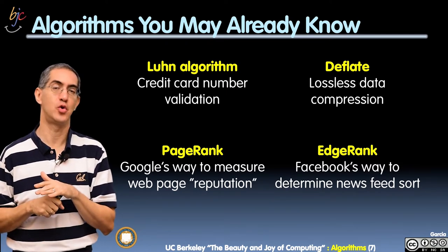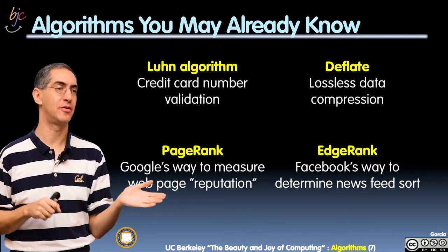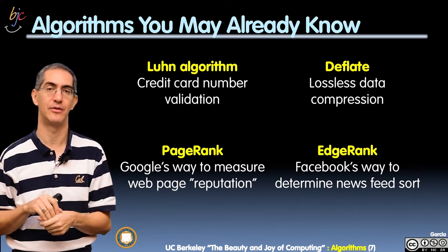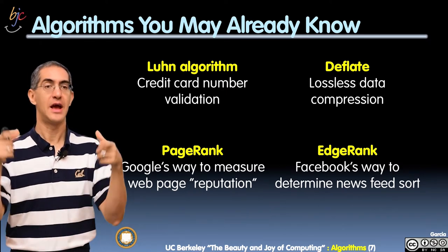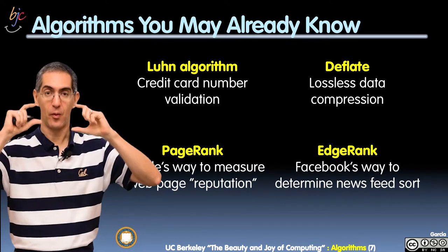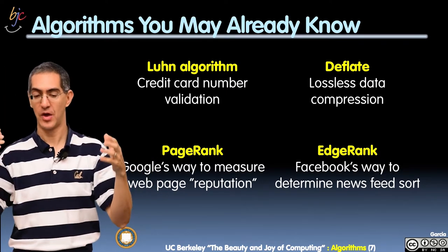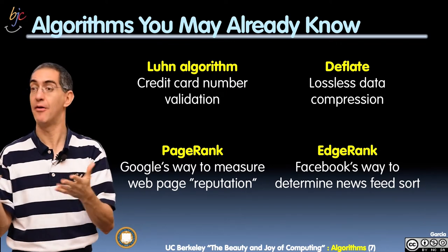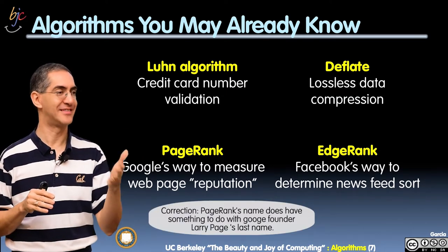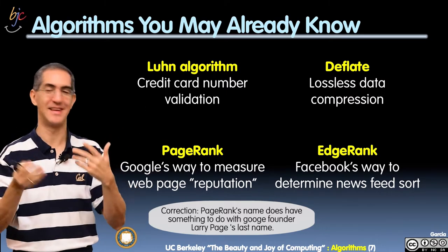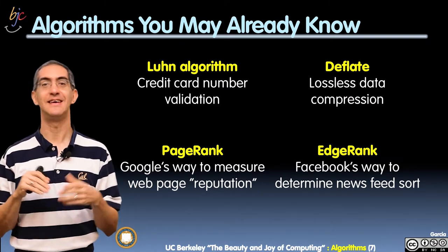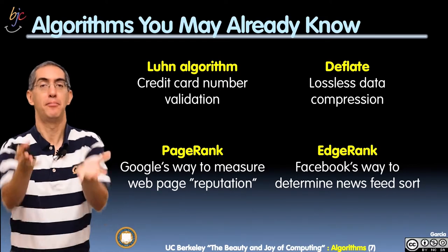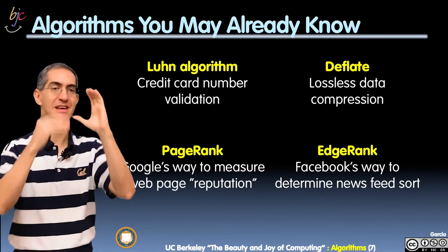I'm sure you've seen Google and Facebook. PageRank is the algorithm that made Google famous — it determines how prominent a website should be in search results based on whether other prominent websites point to it. It's a very powerful algorithm invented at Stanford that Google was built around. And interestingly, PageRank is about webpages, not named after founder Larry Page — though it's kind of funny that way. EdgeRank is the algorithm Facebook uses to figure out what news items should appear in your feed.